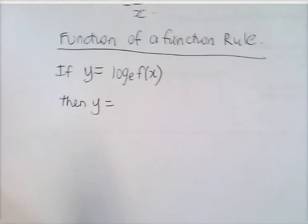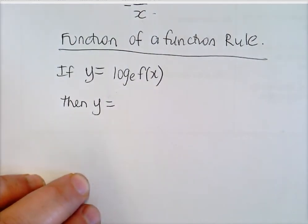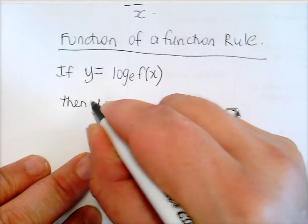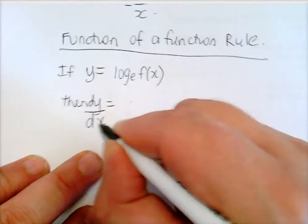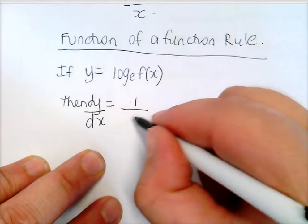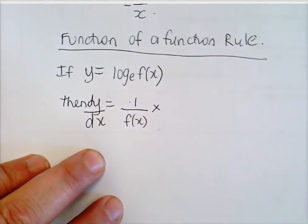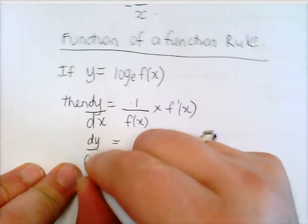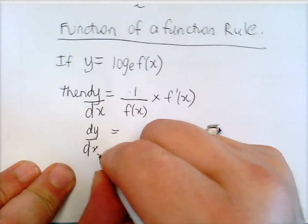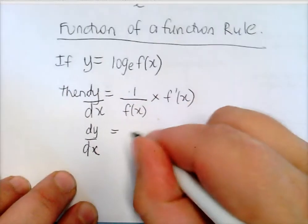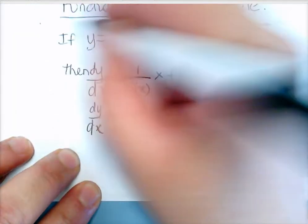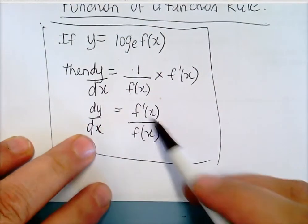Now the function rule. If y equals log to the base e of some function of x, the rule is just: do the same thing and multiply by the derivative — we've done it for trig functions and exponential functions. So if y equals log to the base e of f(x), then dy/dx is 1 over f(x) times f'(x). That is, dy/dx is f'(x) on f(x).